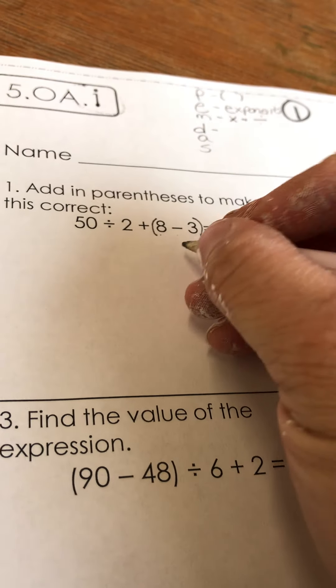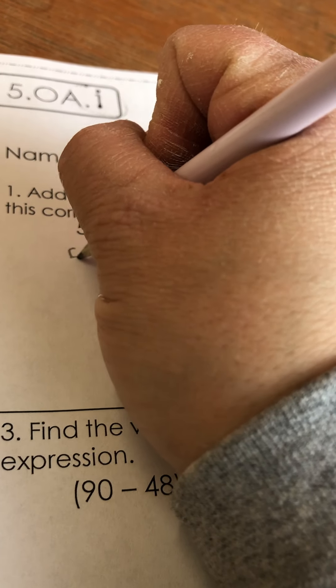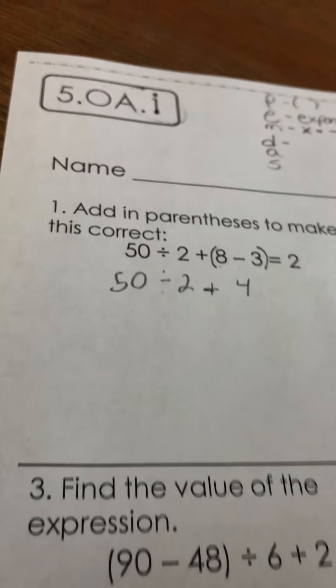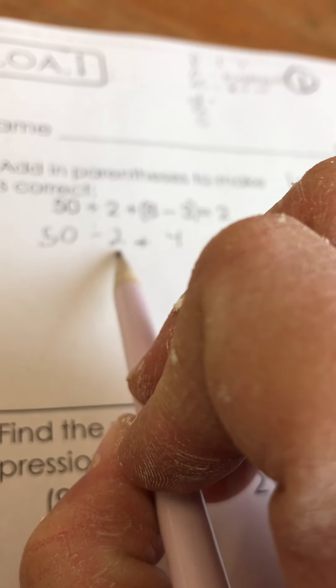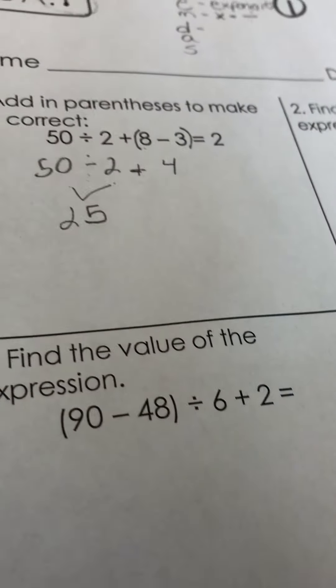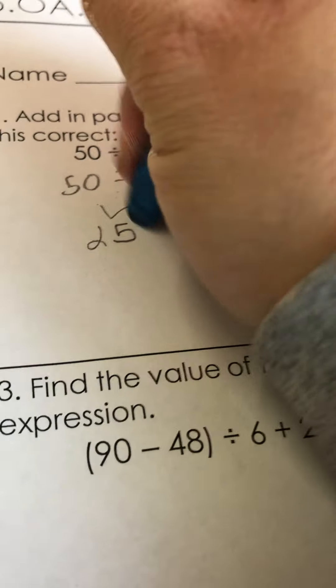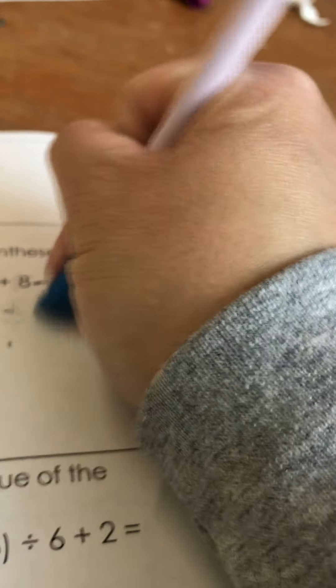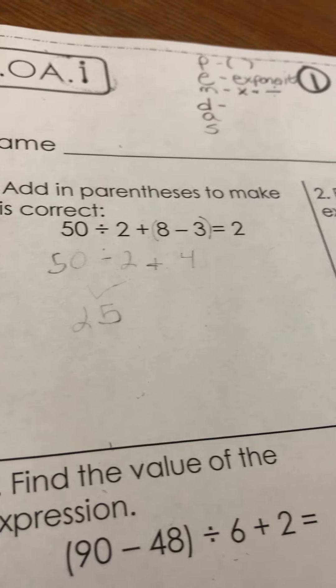So 8 minus 3 is 4. Okay, now according to order of operations I would then divide. So I would have 50 divided by 2, which is 25, and then plus 4. That's not going to get me to 2. So I'm going to have to try something else. I'm just going to erase this. Okay, so let's try something else.